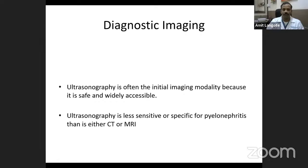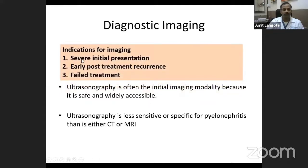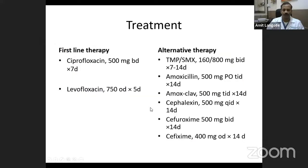For imaging diagnosis, ultrasonography is often the initial modality because it is safe and accessible, though it is less sensitive and specific for pyelonephritis compared to CT or MRI. Ultrasonography is indicated when the presentation is very severe, there is recurrence after treatment, or you suspect treatment has failed — to rule out obstruction or a functional cause of recurrence. Treatment typically involves these drugs; the commonly used first-line therapies and alternative therapies are noted on the slide.